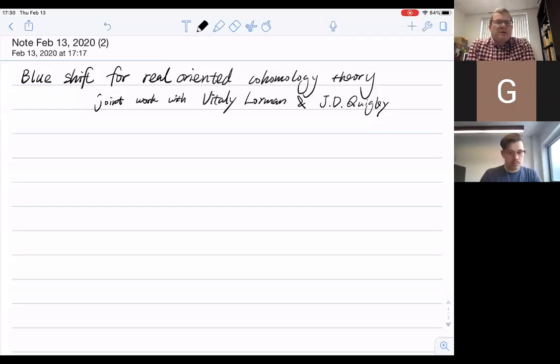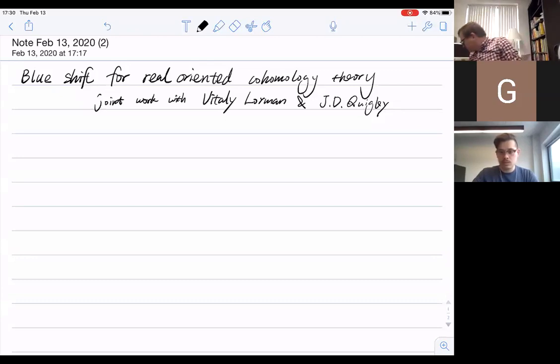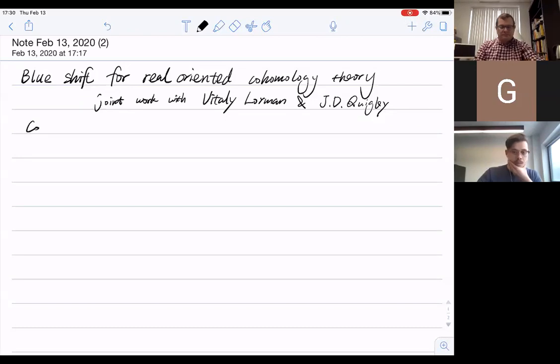Today's speaker is Gu Chuan Li from University of Copenhagen who will tell us about blue shift for real-oriented cohomology theory. Thanks for the invitation. It's really my pleasure to speak here. Let me first be more precise about my title. I want to say which real-oriented cohomology series will be the interesting one in this talk and what kind of phenomena, the blue-shaped phenomena, we will be interested in.